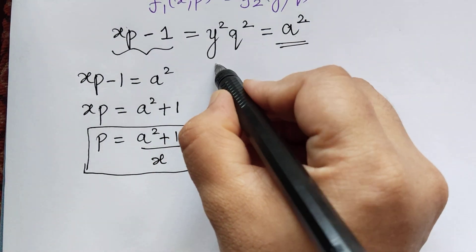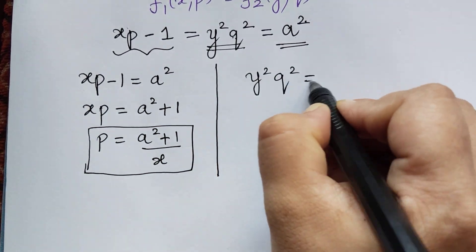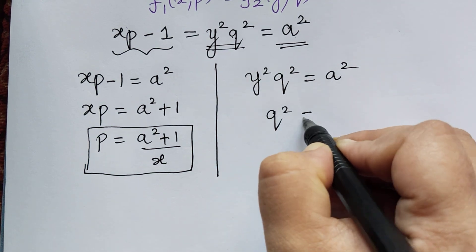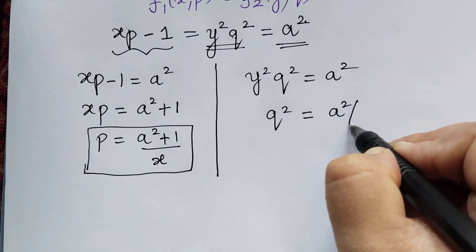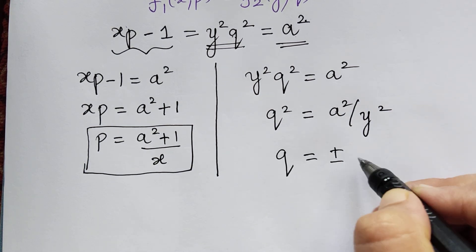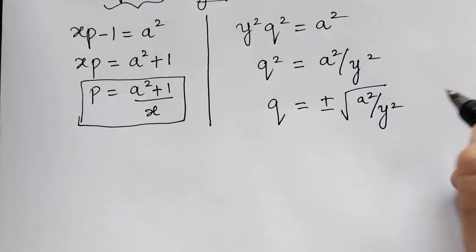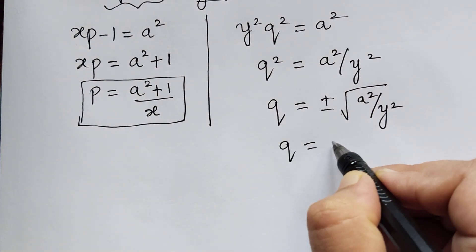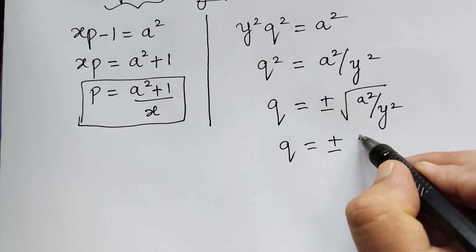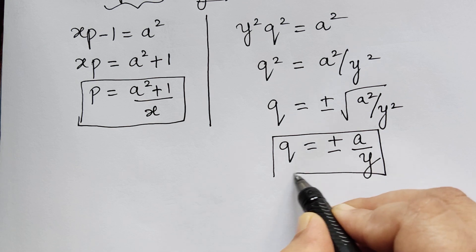Now, in order to get the value of q, we equate the second part: y squared q squared is equal to a squared. From this, q squared will be equal to a squared divided by y squared, and therefore the value of q will be equal to plus or minus a by y.